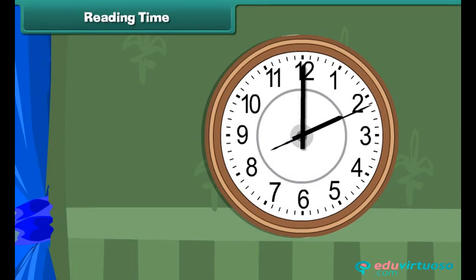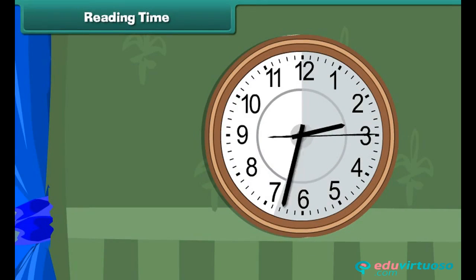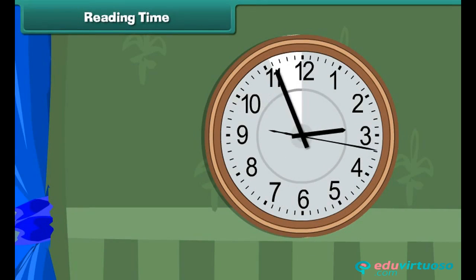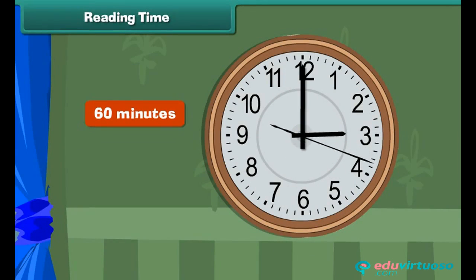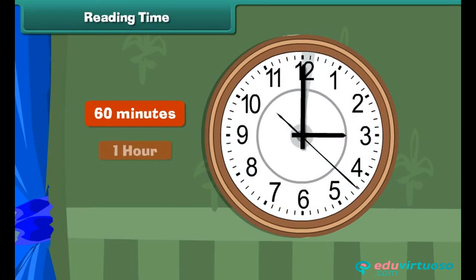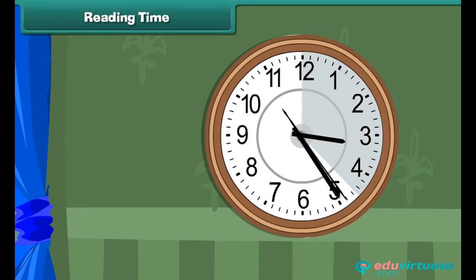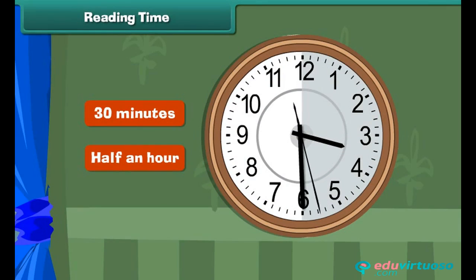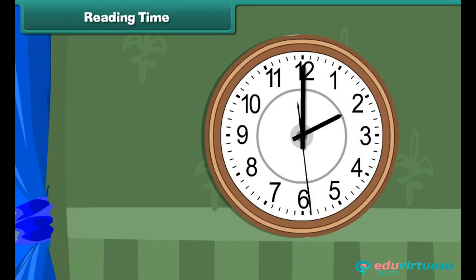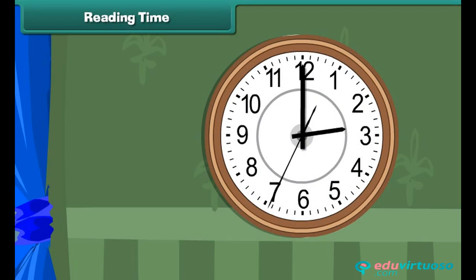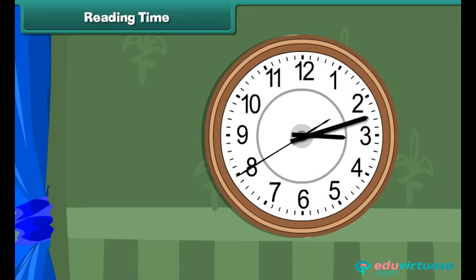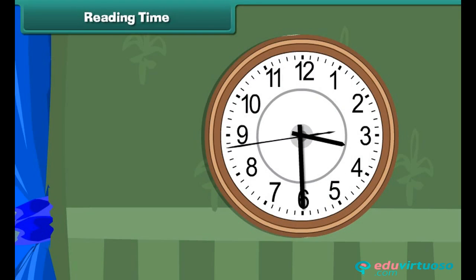Reading time. We just learned that there are 60 minutes in one hour, which means there are 30 minutes in half an hour. An hour is completed when the minute hand completes one full circle from 12 to 12. When it completes half a circle from 12 to 6, half an hour is completed.